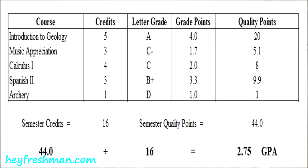Once you have the number of quality points for each class, add them all together and write that number down. So at this point you'll have two numbers. Divide them into each other.